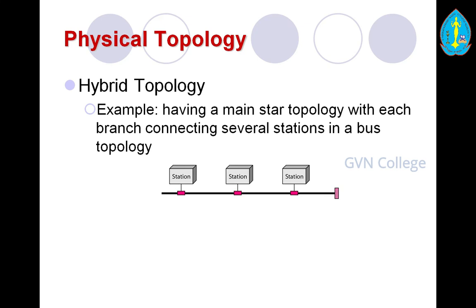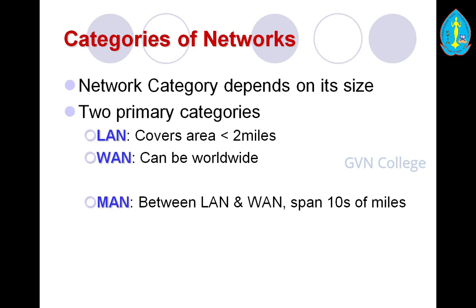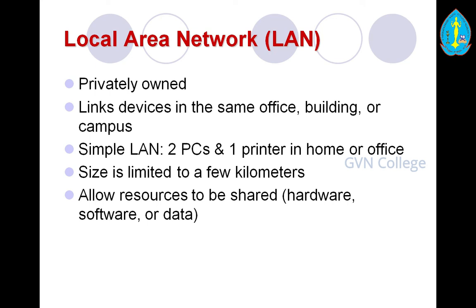Next, categories of networks. Network category depends on its size. Two primary categories are LAN and WAN. LAN covers less than 2 kilometers of area. WAN can be worldwide. Between LAN and WAN spans 10 kilometers — that is the MAN. A local area network (LAN) is privately owned by an institution. It links devices in the same office, building, or campus. A simple LAN has 2 PCs and 1 printer in a home or office. Its size is limited to a few kilometers and it allows resources — hardware, software, or data — to be shared.